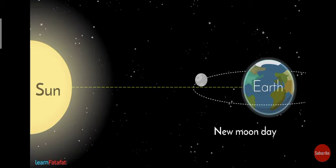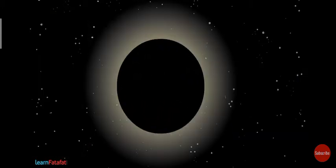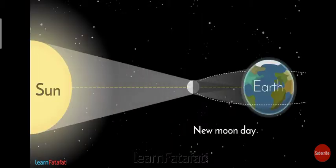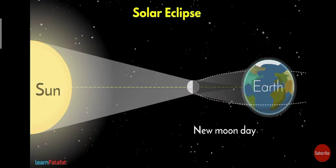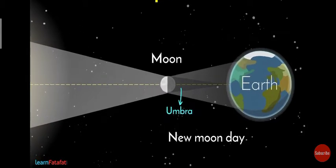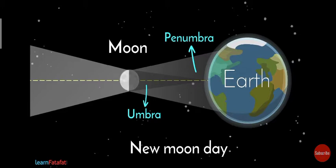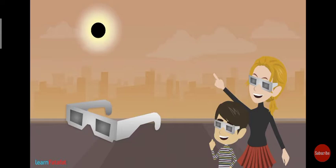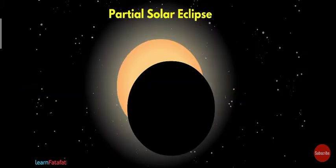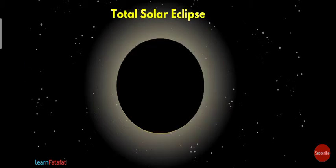When the moon is between the Earth and the Sun, a solar eclipse occurs. The shadow of the moon falls on the Earth. The darker part is called the umbra and the lighter part is called the penumbra. When a solar eclipse occurs we have to wear special goggles to look at the Sun. This is called a partial solar eclipse, and when the Sun is completely covered it is called a total solar eclipse.